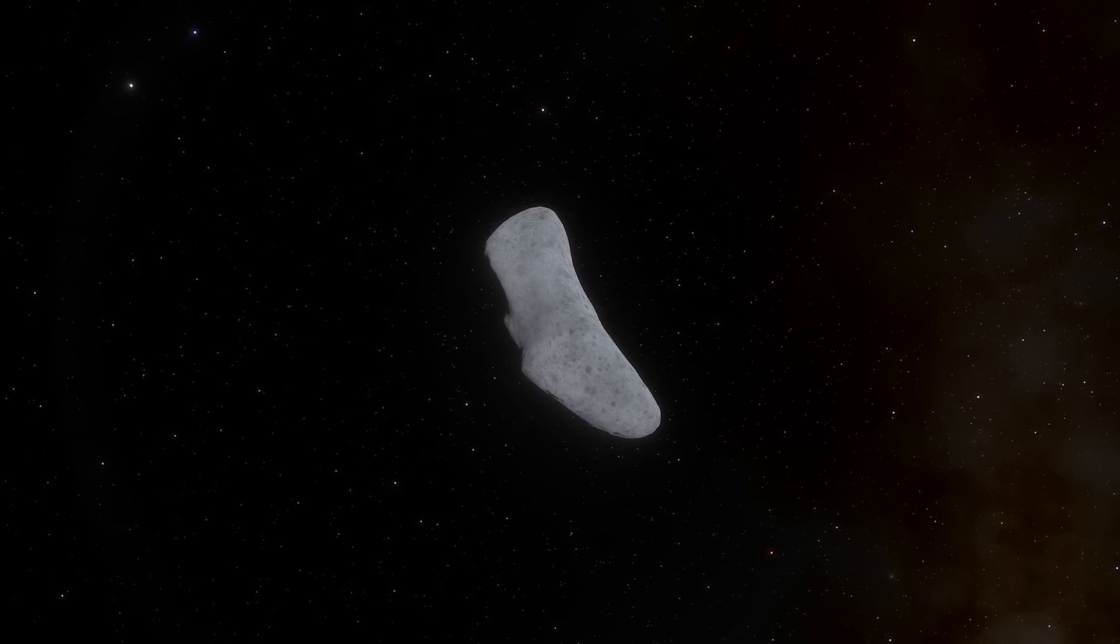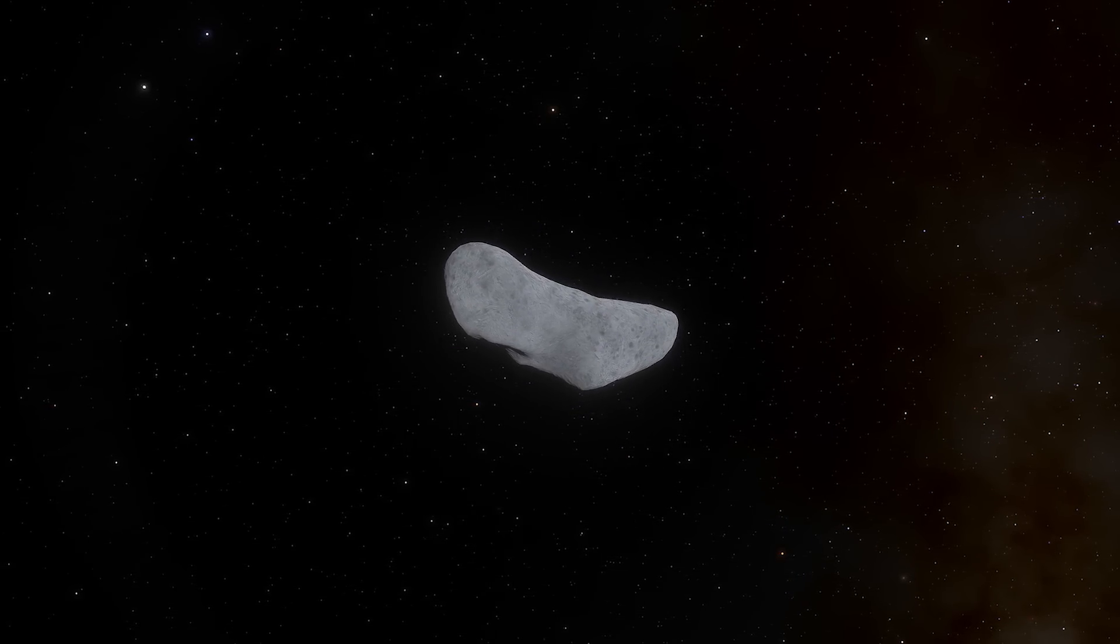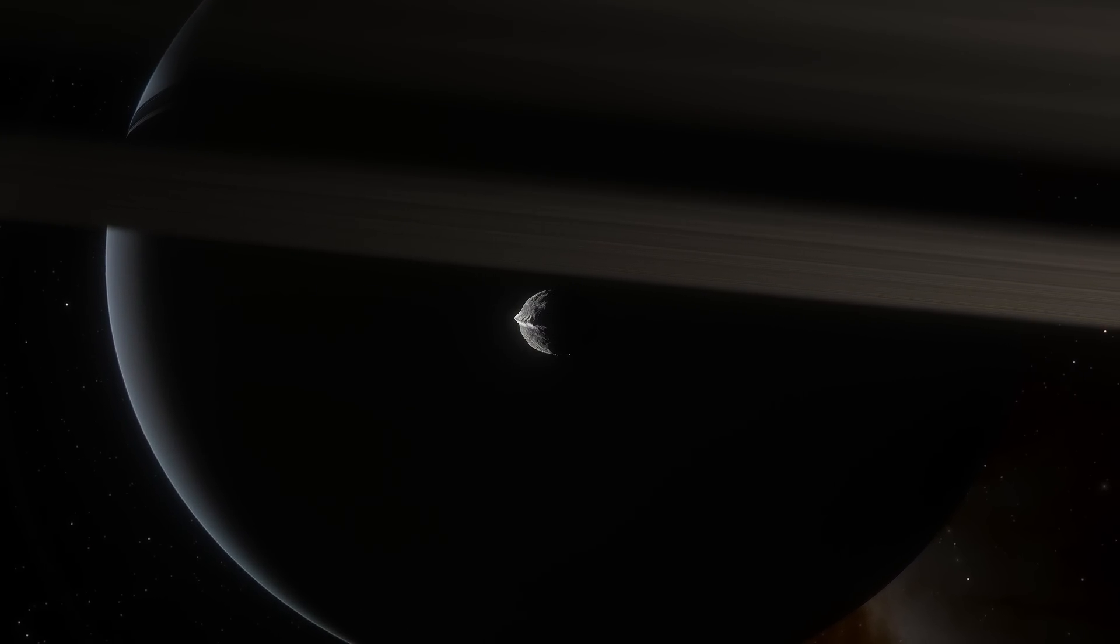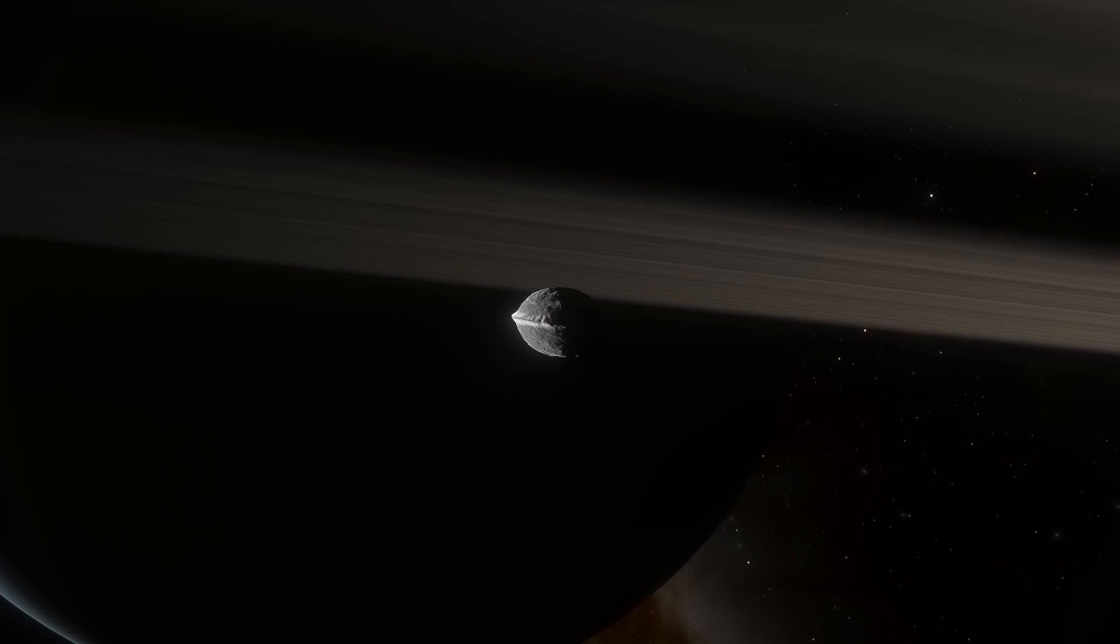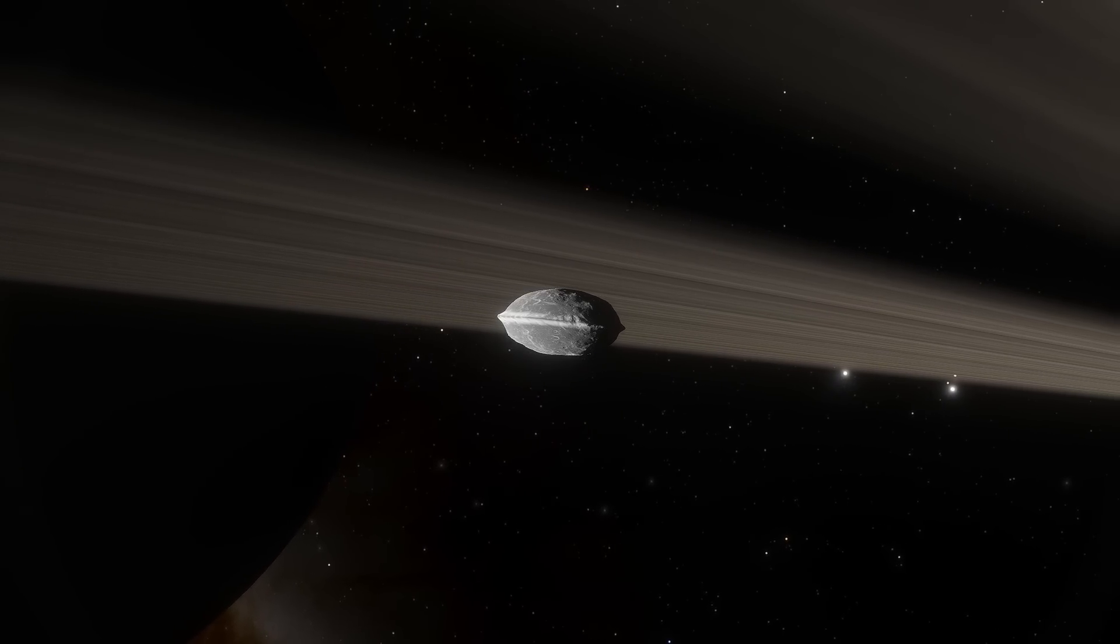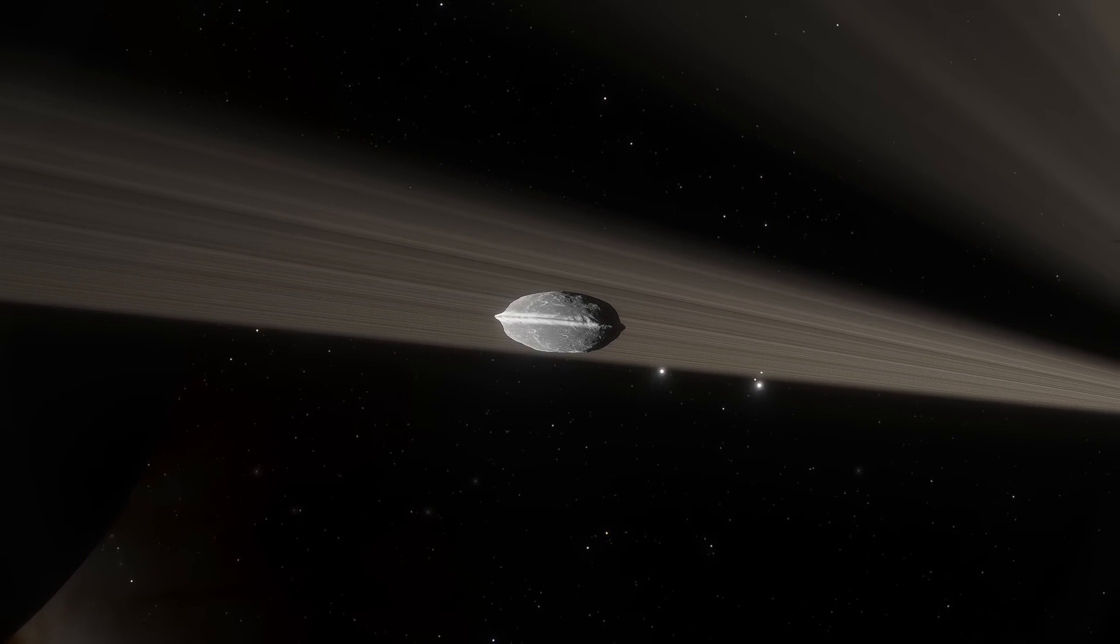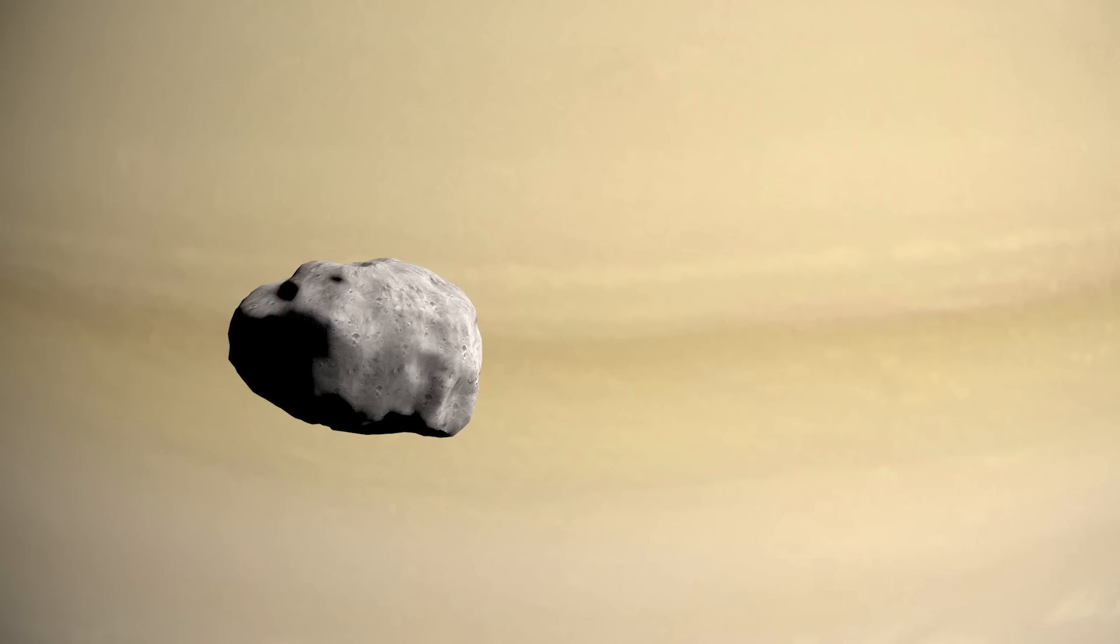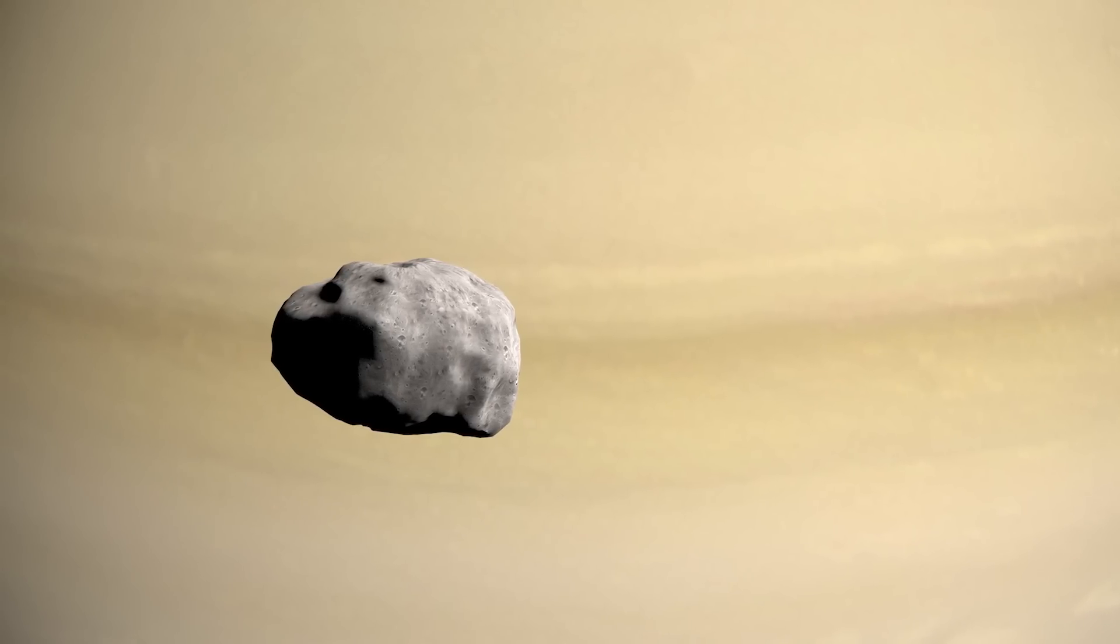And then there are the cosmic oddballs. Smaller objects like asteroids and some moons don't have enough gravity to pull themselves into spheres. They end up looking like lumpy potatoes or misshapen rocks. Fun fact, out of almost 300 moons in our solar system, only about 20 are spherical. The rest are, let's say, uniquely shaped.